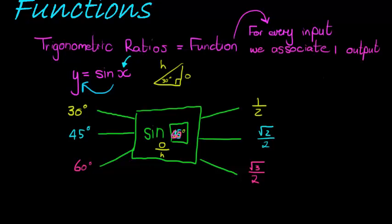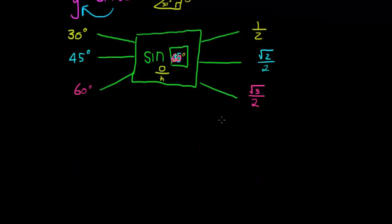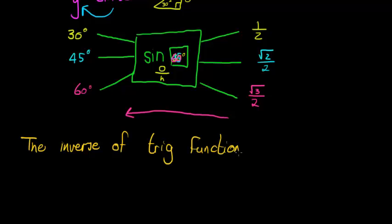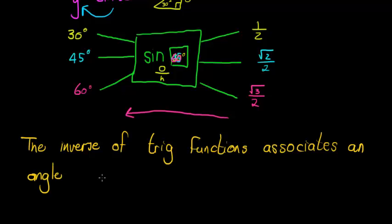Now when we have functions, we can always also look at the inverse. The inverse asks the opposite question — the inverse takes the output and associates it with the input. So the inverse of trig functions associates an angle with a ratio.